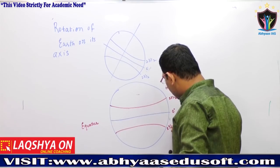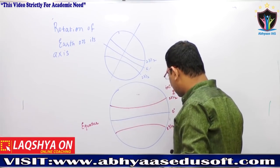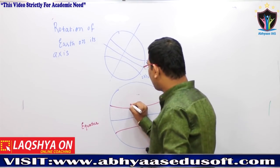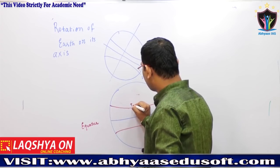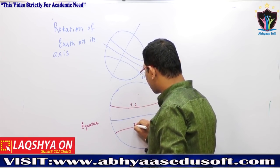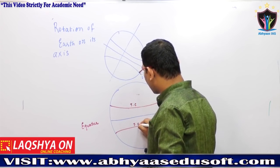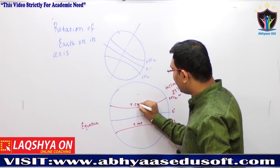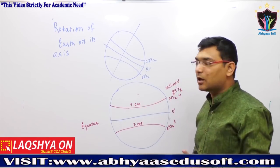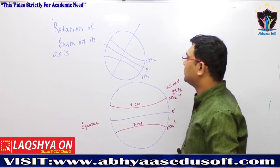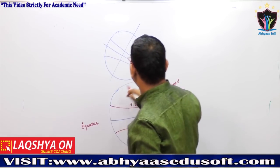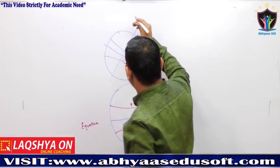23 and a half degrees south is called the Tropic of Capricorn, and 23 and a half degrees north is called the Tropic of Cancer. So we have the Tropic of Cancer and Tropic of Capricorn. Now let's look at the sun.